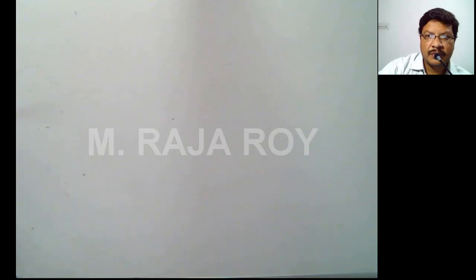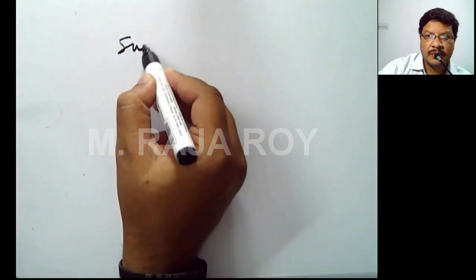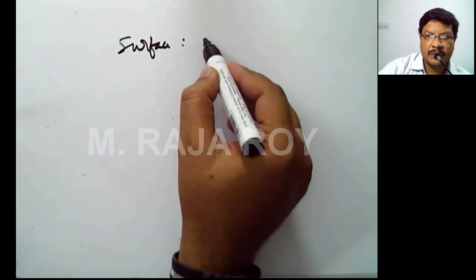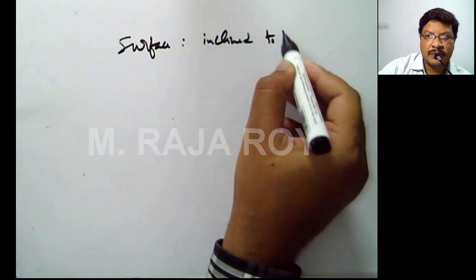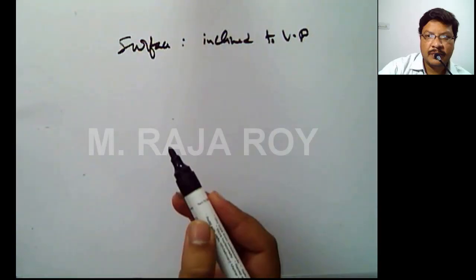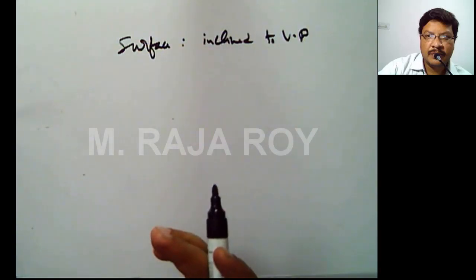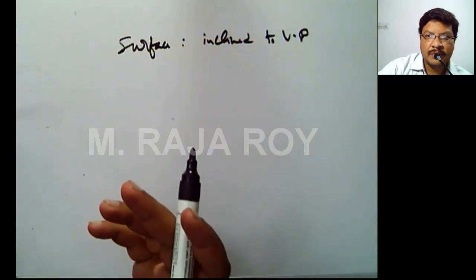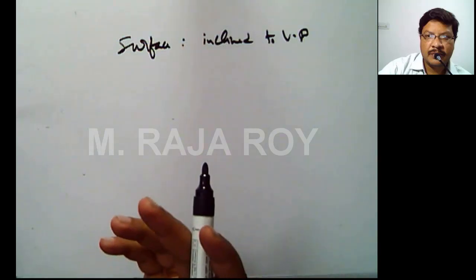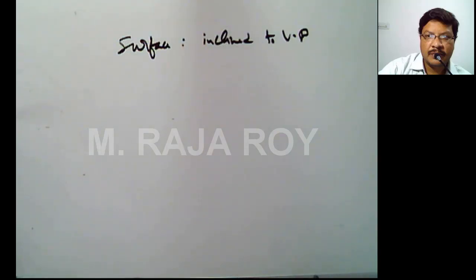When the isosceles triangle is seen as an equilateral triangle in the front view, we can understand that the surface is making an angle with VP — so the surface is inclined to VP. Similarly, if a circle is seen as an ellipse in the front view, or a rectangle is seen as a square in the front view, you can understand that the surface is inclined to VP.